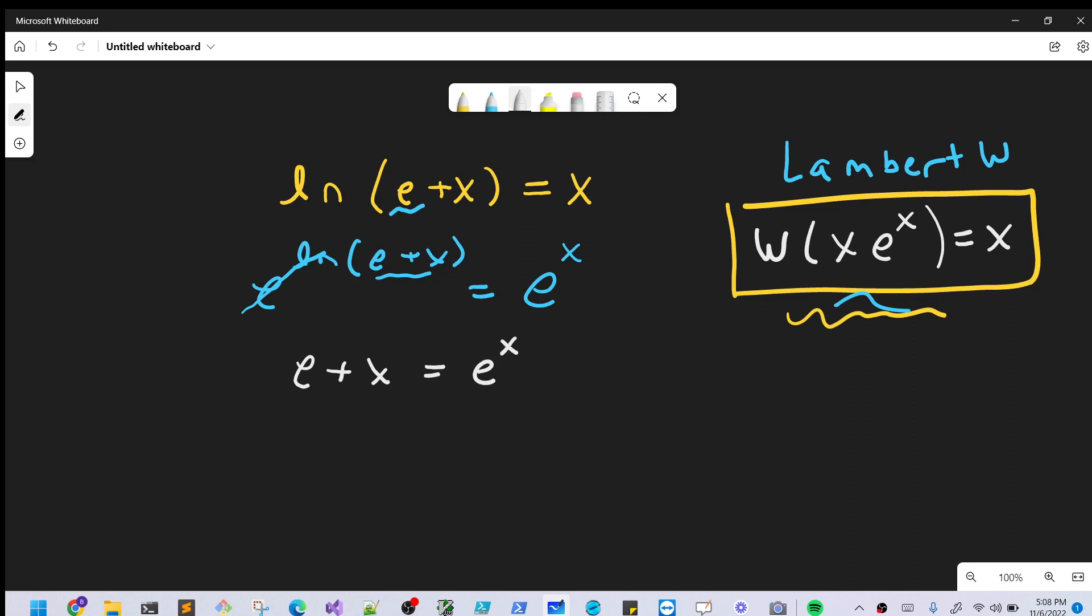So then doing that now we have e+x equals e^x. This is good, we've produced our e. From here what we want is we'd like to see these all on the same side, we want to have this as a product, so what I can do is let's divide both sides by e^x.